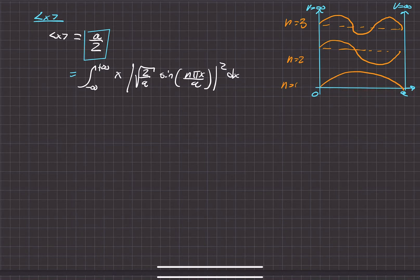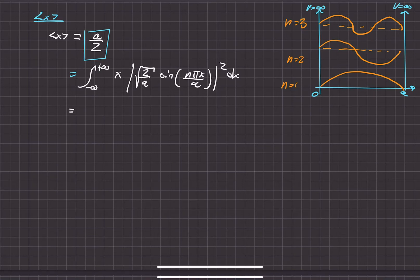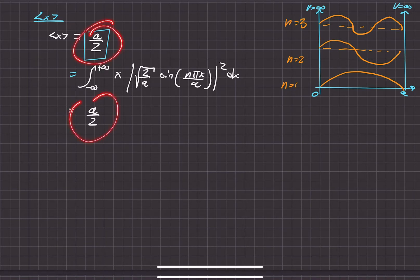This integral is not too bad to solve using integration by parts. You can change the limits, look it up in a table, or use a calculator. Personally, I prefer qualitative reasoning first, then calculator, then table, then doing it by hand. Either way, you'll find the result agrees with our physical interpretation — the expectation value of x is A over 2, right in the middle.